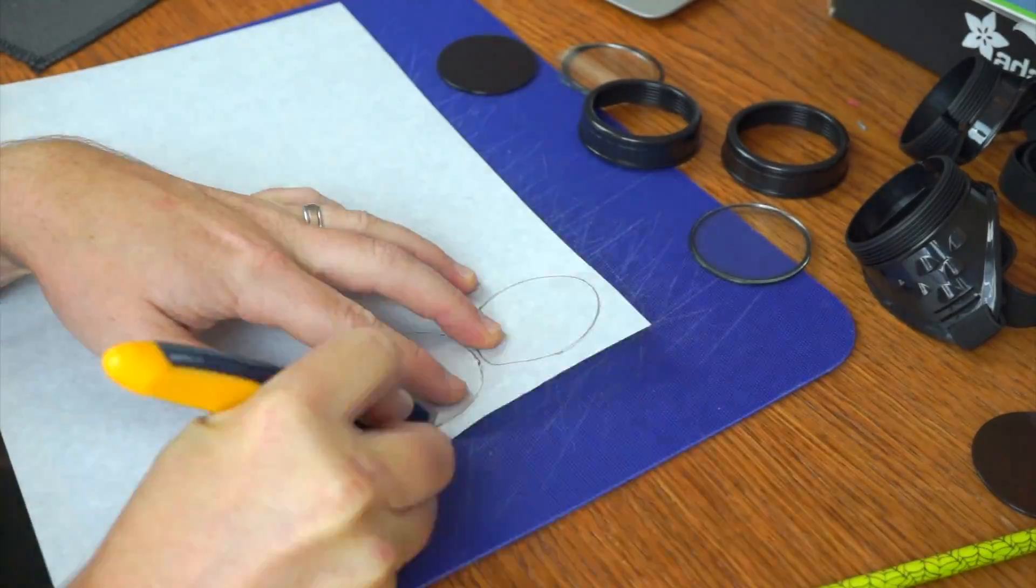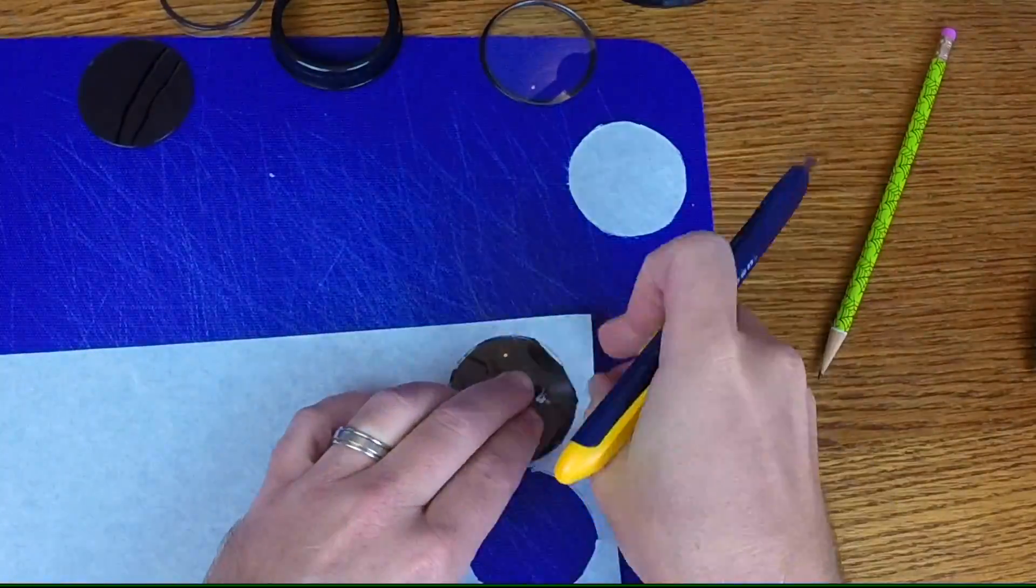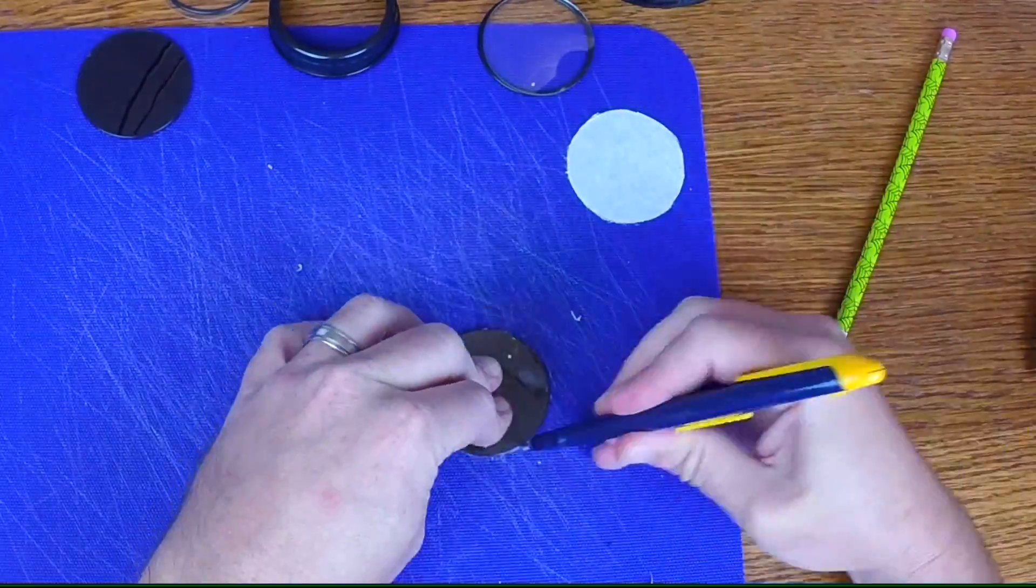All right, here I'm using the lenses to trace out the size of the diffuser that I need, and then cutting the rest of it out with an X-Acto knife. I probably just could have used scissors instead.